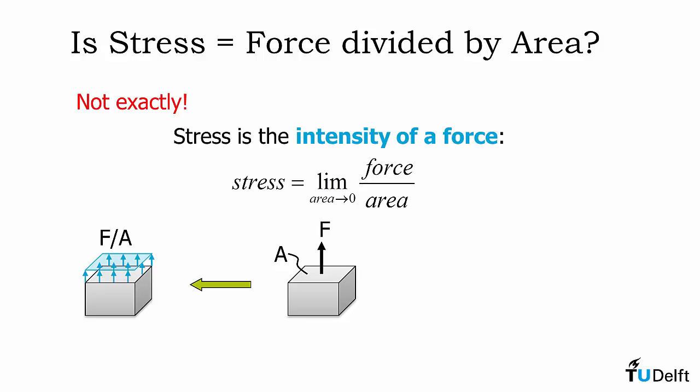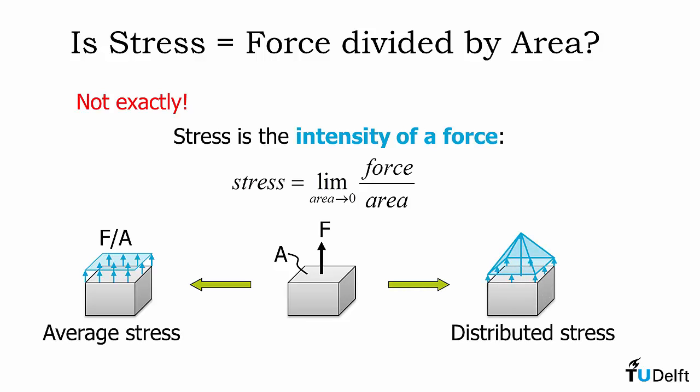The reason this is important is there may be some cases where you have higher stresses acting on a surface and in other areas lower, as shown on the right here. You could have a distributed level of stress. This is important in materials, the performance of the materials, and in the failure of materials, where the average stress shown on the left might actually get you into trouble.